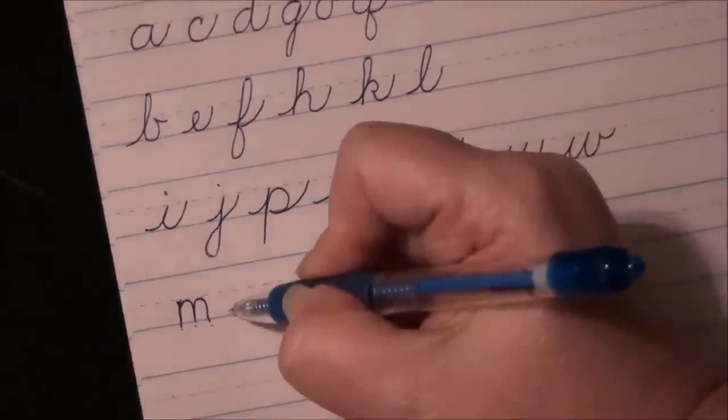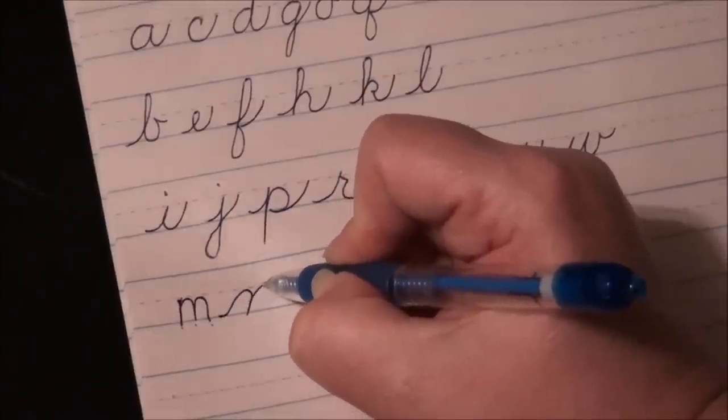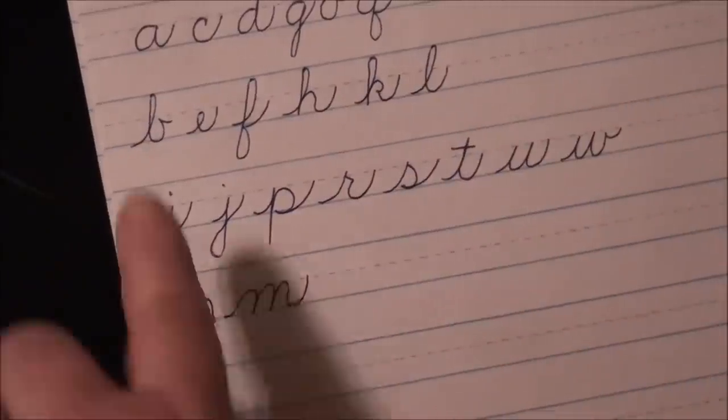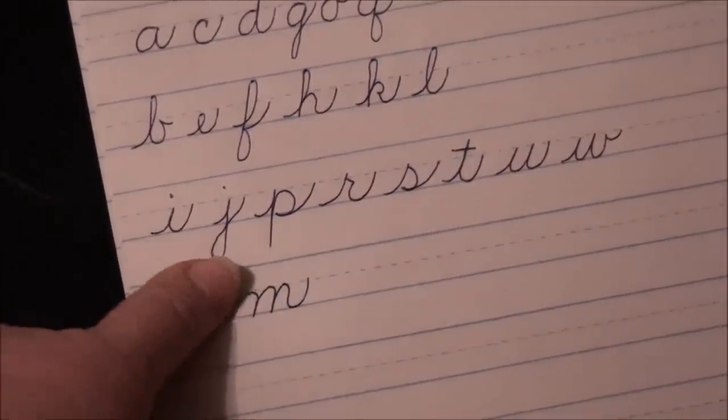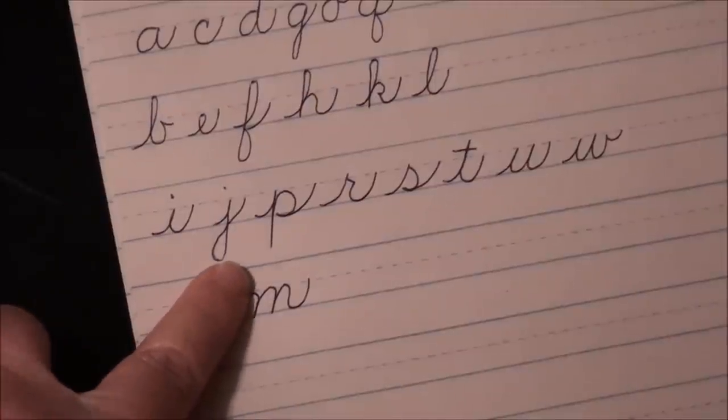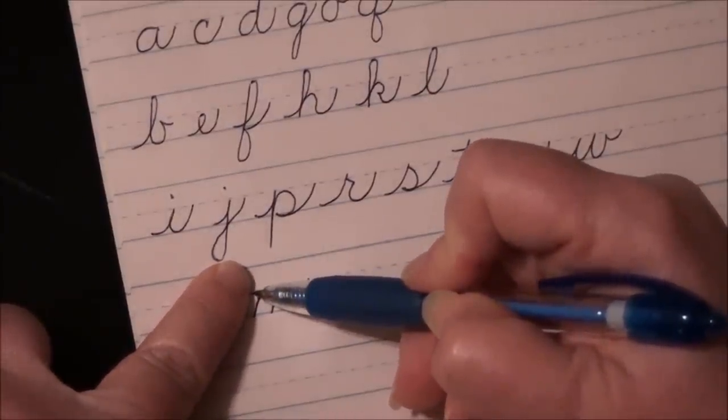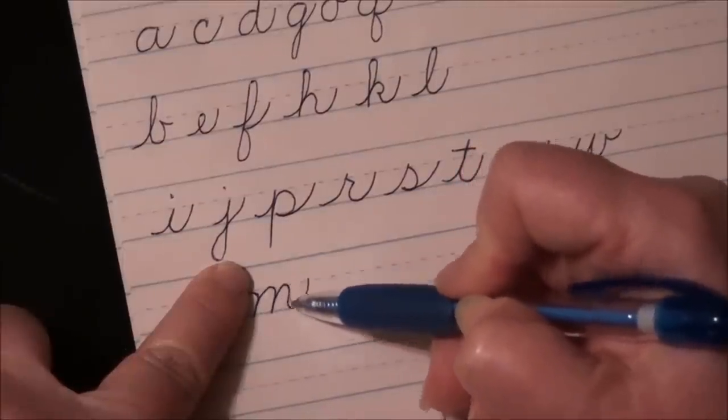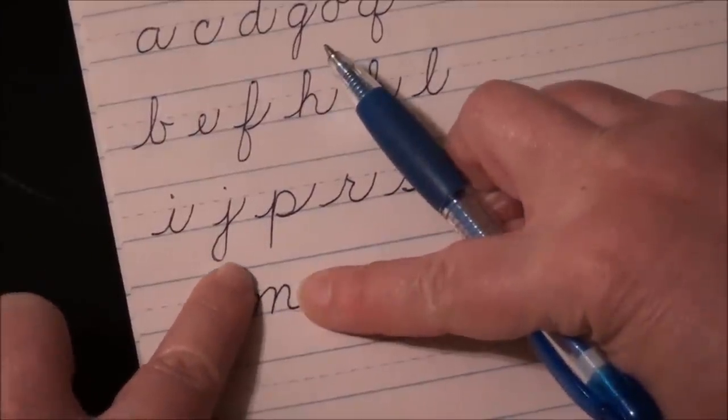Here's cursive M. You come up for a hump. One, two, three. Okay. If you cover up the lead in part, the lead in line, I'm hoping my shadow is not too much here, you can see that it starts from the midline and it comes down. So that's one, then two, three, and then your tail. So here's your printing M right there.